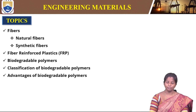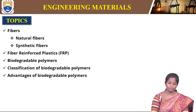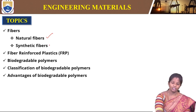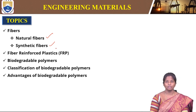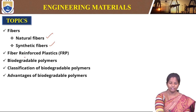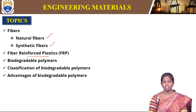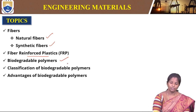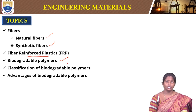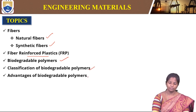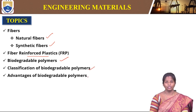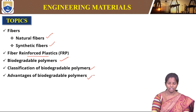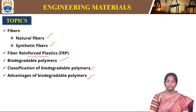Here are the topics: fibers — there are two different types of fibers, natural fibers and synthetic fibers — then fiber reinforced plastics, which is a hybrid composite used in many applications. Then biodegradable polymers, their classification, and the advantages of biodegradable polymers in construction and other applications.